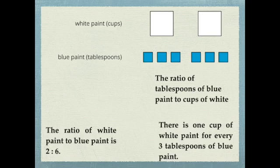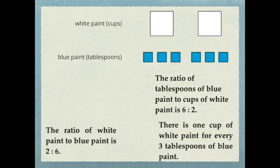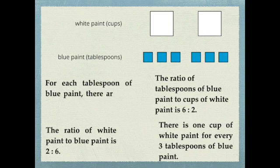The ratio of tablespoons to blue paint, the ratio of tablespoons of blue paint to cups of white paint is six to two. For each tablespoon of blue paint, there are two cups of white paint.